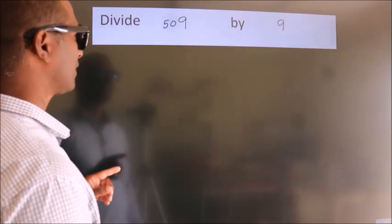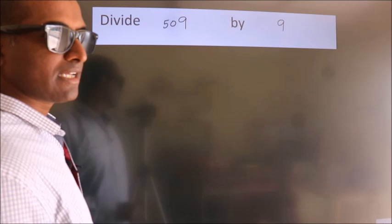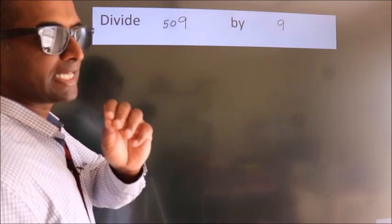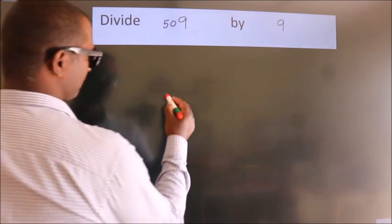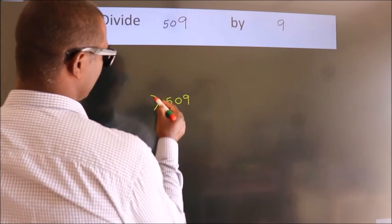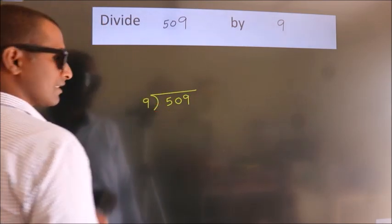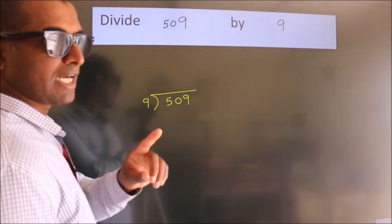Divide 509 by 9. To do this division, we should frame it in this way: 509 here, 9 here. This is your step 1.